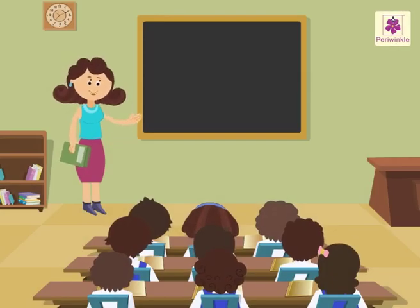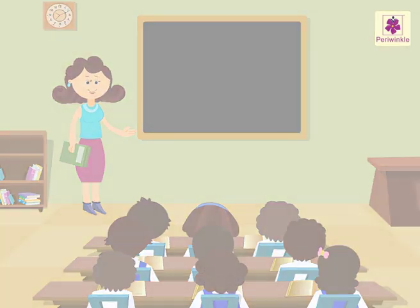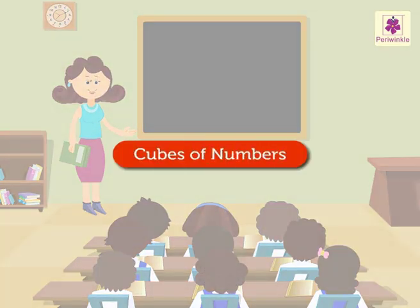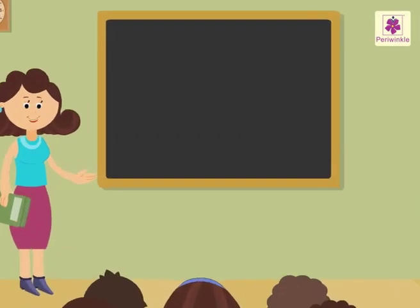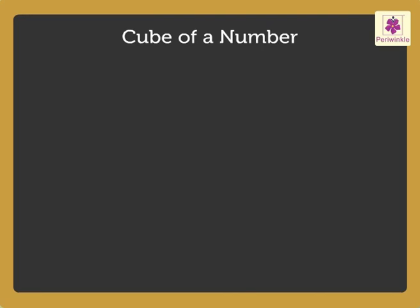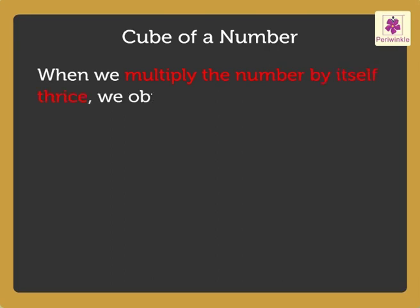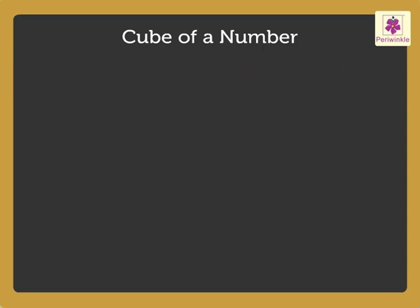Today, let us learn Cubes of Numbers. What do you mean by the cube of a number? When we multiply the number by itself thrice, we obtain the cube of a number. Let us take the number 4.